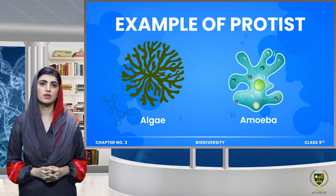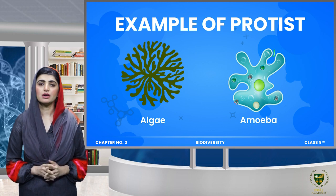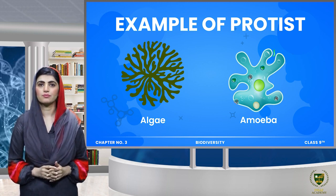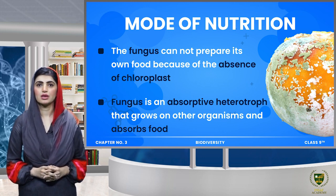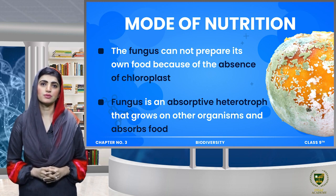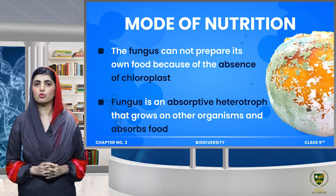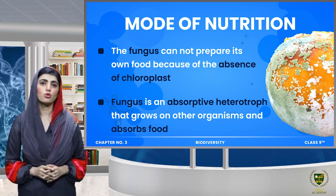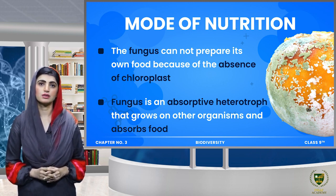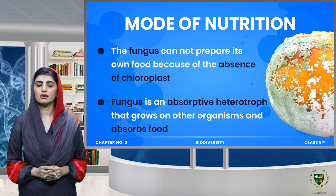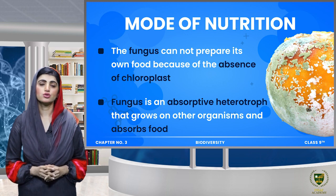In our previous lecture, we included algae and amoeba, and we also saw how their locomotion works and what their mode of nutrition is. Some protists are autotrophic, like algae which prepare their own food. But some protists are heterotrophic, like fungi-like protists. Today we are going to study a new kingdom — Kingdom Fungi.